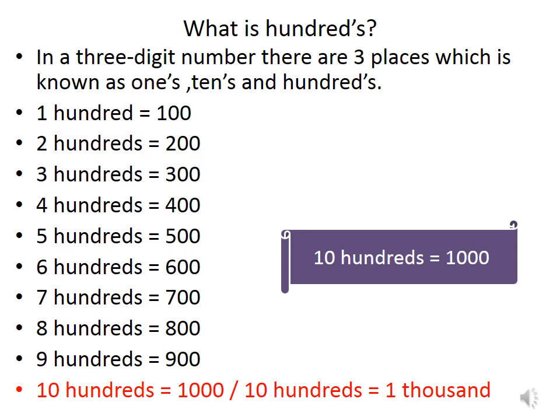So, 1 hundred is equal to 100, 2 hundreds is equal to 200 and so on. But as soon as we combine 10 hundreds, we can call it as 1000. So, these are our basic 3 places of 3 digit number.